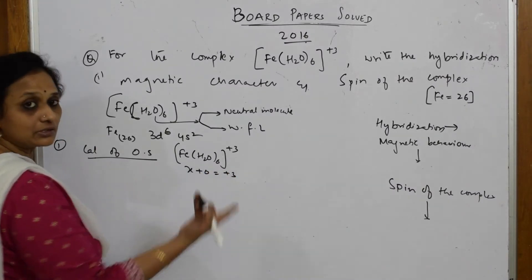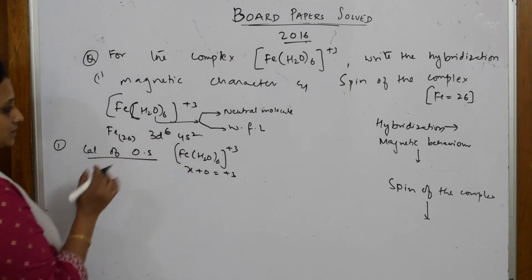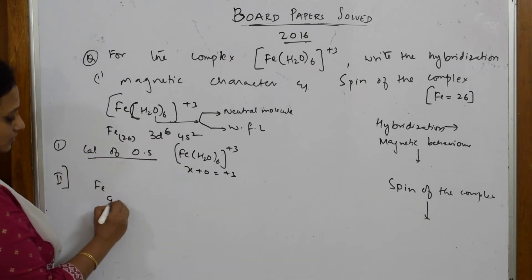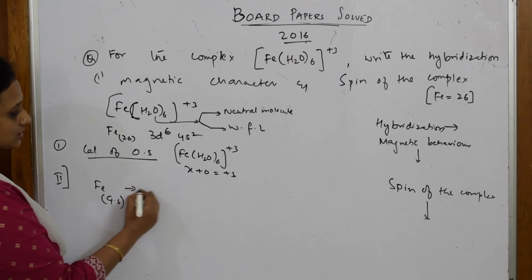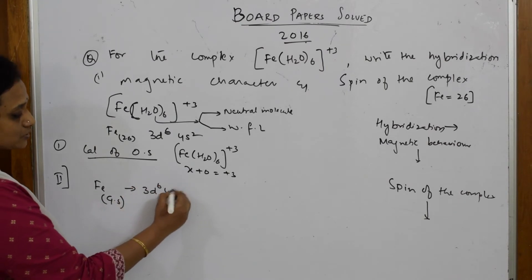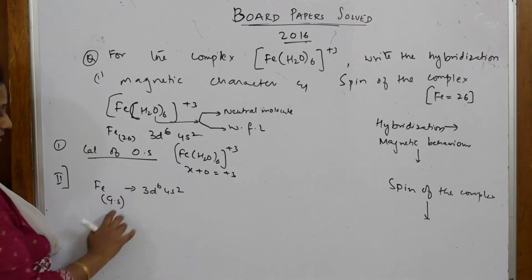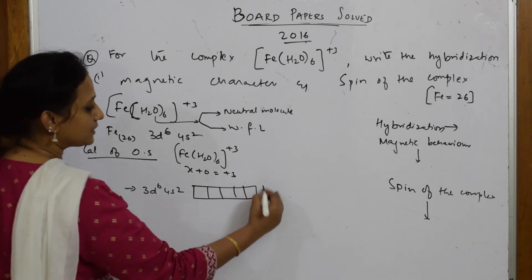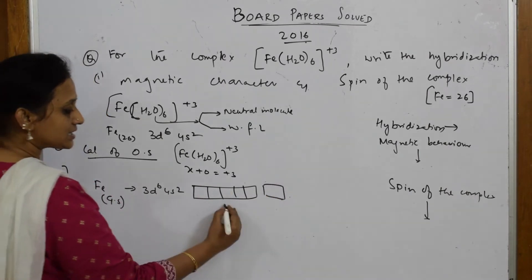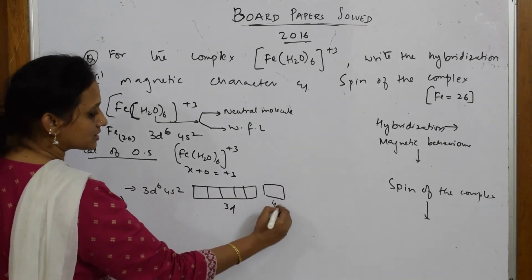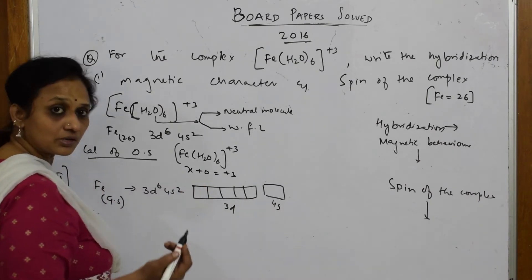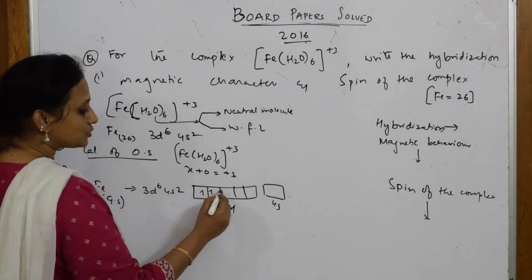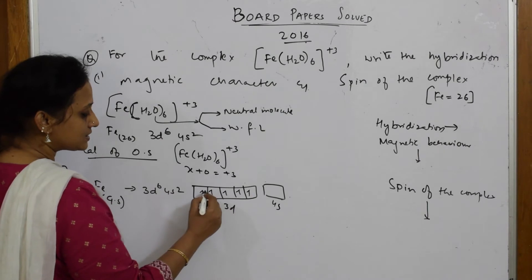In step 2, write iron in the ground state. Iron in ground state is 3d6 4s2. I have to represent: 3d6 filled according to Hund's rule - 1, 2, 3, 4, 5, and 6. And 4s2 here.